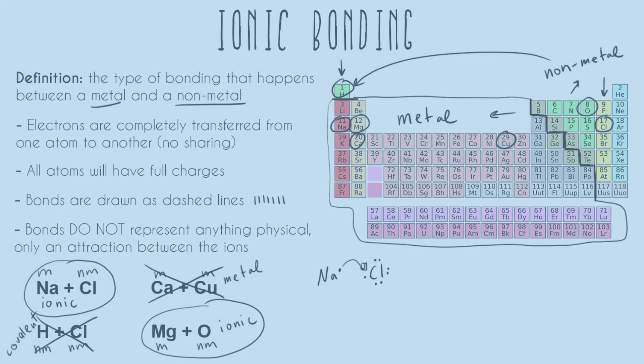And chlorine is going to say, great, I want that valence electron because that gets me to 8. And so what's going to happen is when that electron transfers, now you have a sodium who's lost one electron. So because you've lost an electron, your charge is positive because electrons themselves are negatively charged.